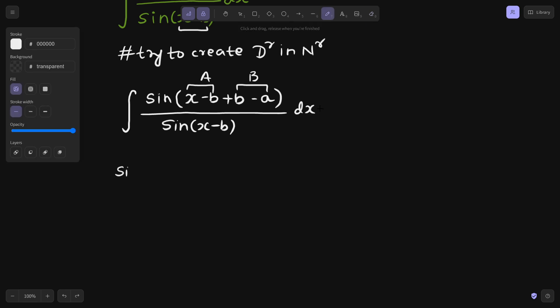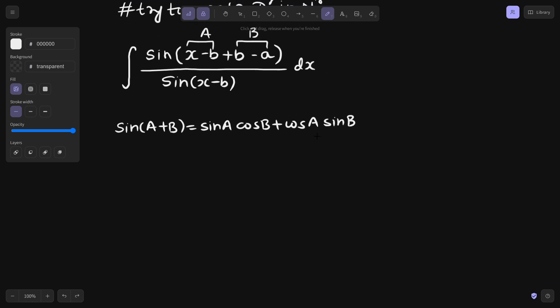So the formula for sin of a plus b is sin a cos b plus cos a sin b. Let's apply this formula.